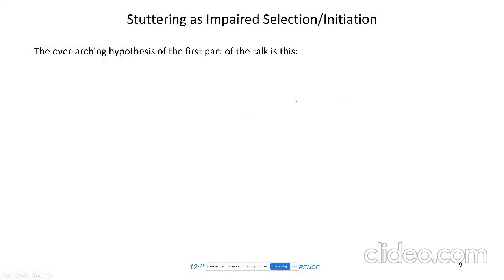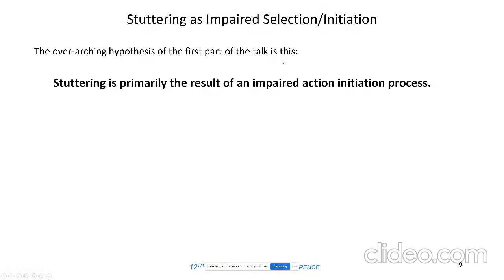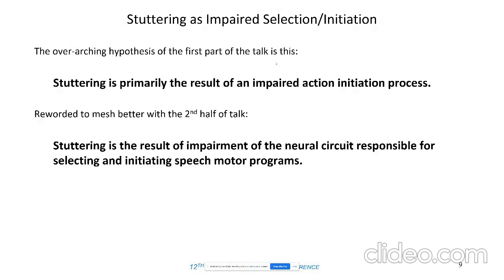The overarching hypothesis is this: stuttering is primarily the result of an impaired action selection and initiation process. Rephrasing to mesh with the second half of the talk — stuttering is the result of impairment of the neural circuit responsible for selecting and initiating speech motor programs. Spoiler alert: that's going to be the cortical basal ganglia thalamic cortical network.